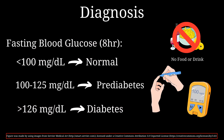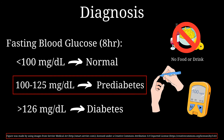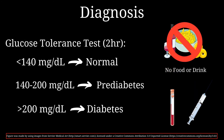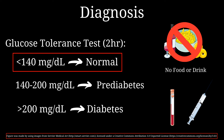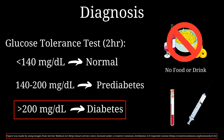Diagnosing diabetes involves assessing blood glucose levels. A fasting blood glucose test requires the patient to avoid eating or drinking anything except water for 8 hours before testing. Levels below 100 mg/dL are normal; between 100 to 125 mg/dL is considered pre-diabetic; and levels above 126 mg/dL are diagnostic of diabetes. Another test is the oral glucose tolerance test, where the patient ingests a measured amount of glucose and blood samples are taken after 2 hours. Levels below 140 are normal; 140 to 200 is pre-diabetic; and above 200 is diagnostic of diabetes.